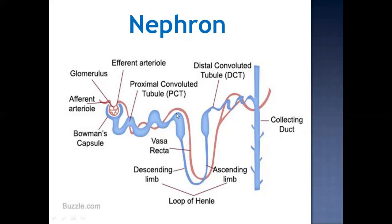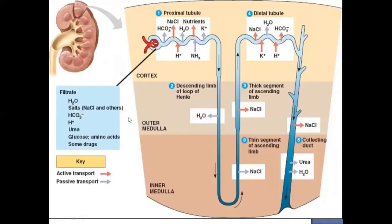The nephron ends at the collecting duct, with blood circulation around the nephron via the vasa recta. The kidney is made up of three layers: cortex, outer medulla, and inner medulla. In the cortex, mainly the PCT and DCT are situated. In the outer medulla, the descending and ascending limbs of the loop of Henle are located. The middle portion of the loop of Henle sits in the inner medulla.